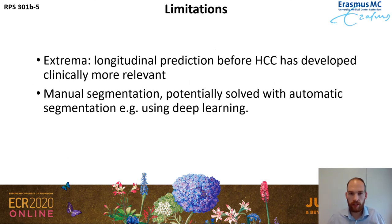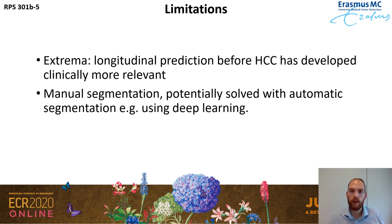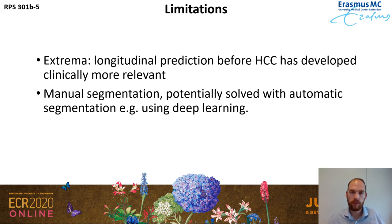Our study has some limitations. First, as a proof of concept we looked at two extrema — livers in which no HCC will develop versus livers in which HCC has already developed. Our ultimate aim is to do a longitudinal study where we can actually predict whether an HCC will develop in the future, rather than looking at livers at the time point when HCC has already developed. Second, we currently rely on manual annotations, which is not feasible in clinical practice since it is time consuming. This might be solved by using automated methods such as deep learning.